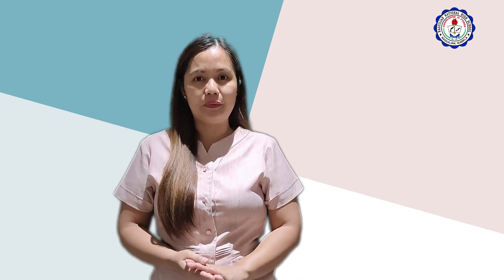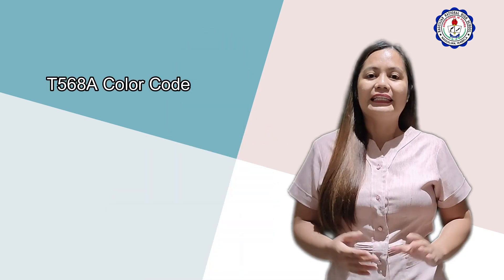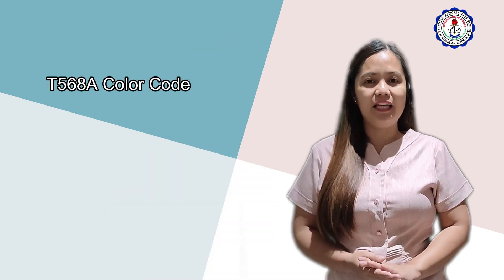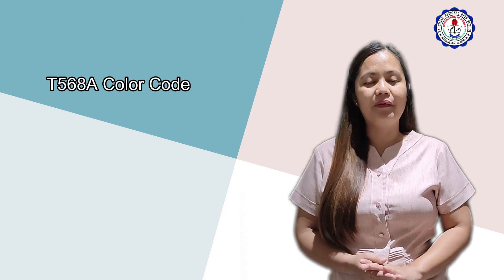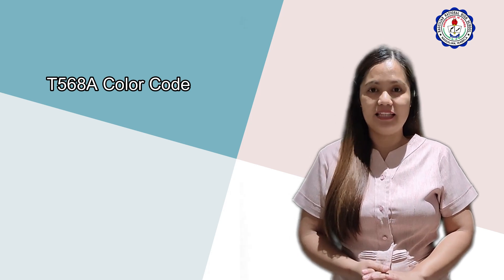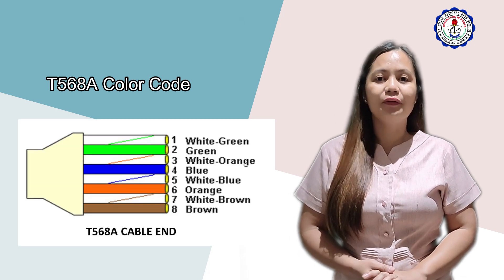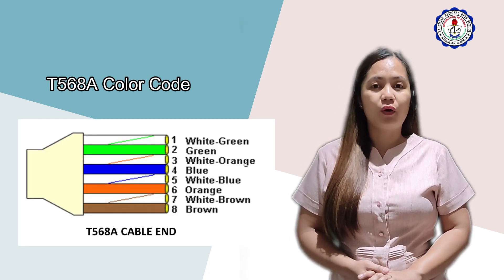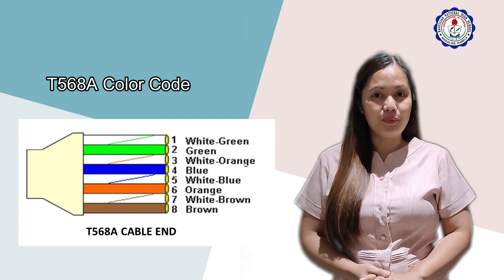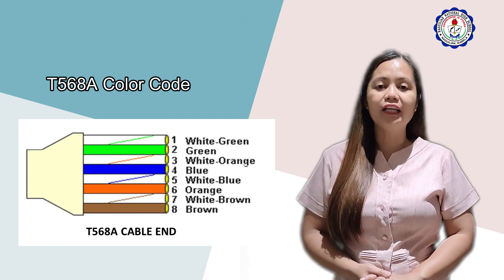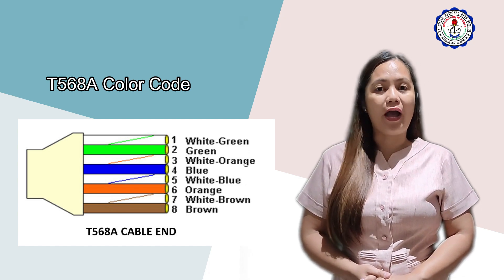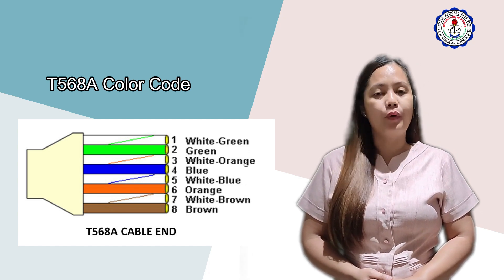What is the difference between the two? The T568B color code arrangement is: white-orange, orange, white-green, blue, white-blue, green, white-brown, brown.